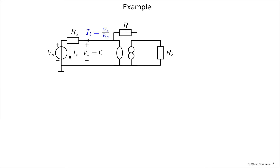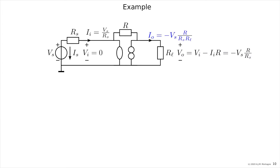Since there can be no current in the nullator, all this current flows through R, and this enables us to calculate the output voltage — the output voltage must be the input voltage, which is zero, minus I_i times R. This gives us that the output voltage equals minus Vs times R over Rs. Having the output voltage, it is simple to calculate the output current, which is just the current through RL: the voltage divided by RL.